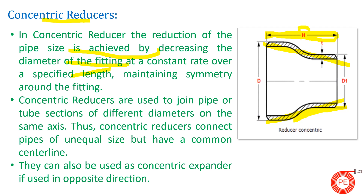Concentric reducers are used to join pipes or tubes of different diameters on the same axis. If the parent pipe and the connecting pipe share the same centerline, we use a concentric reducer — meaning the centerline does not change. Concentric reducers are used for same-axis joining. If used in the opposite direction, they function as concentric expanders.